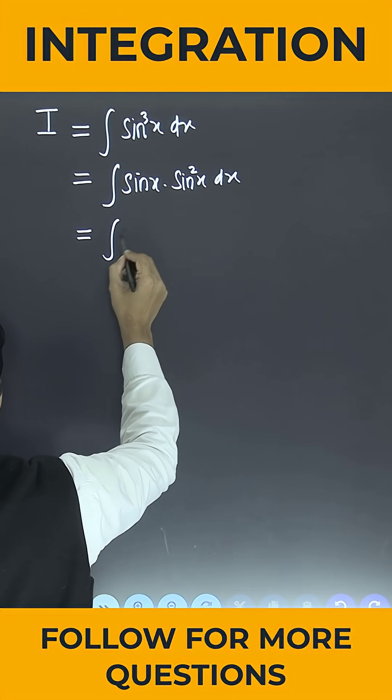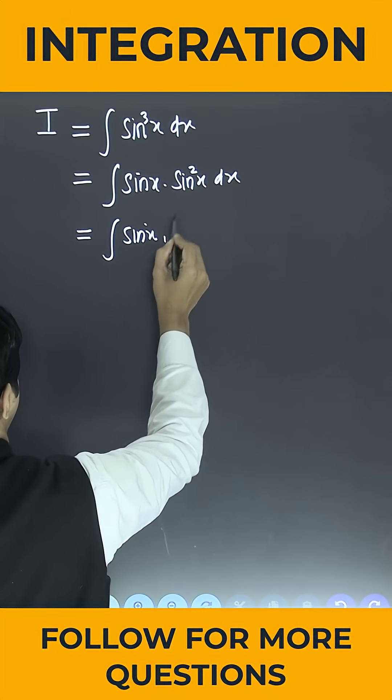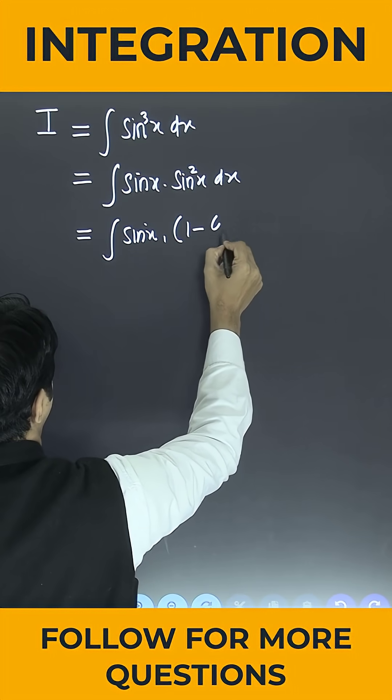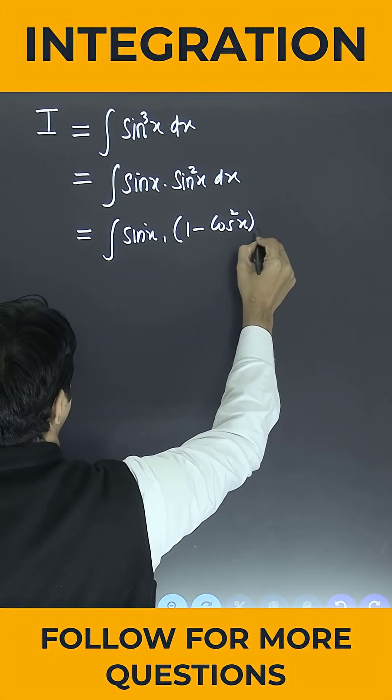This is equal to integration sin x. Can I write this as nothing but 1 minus cos square x into dx? Yes.